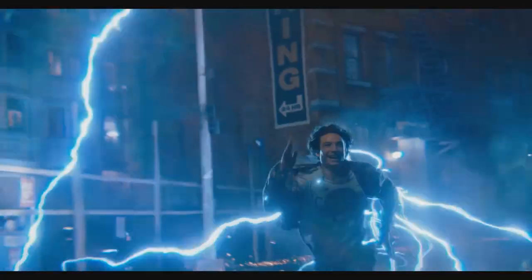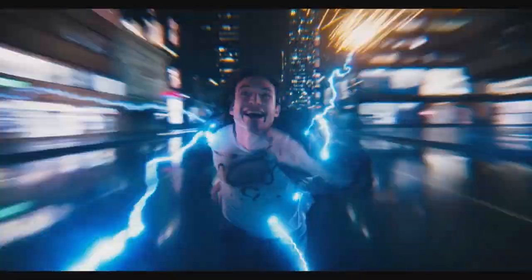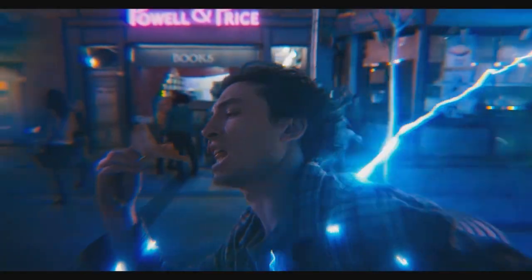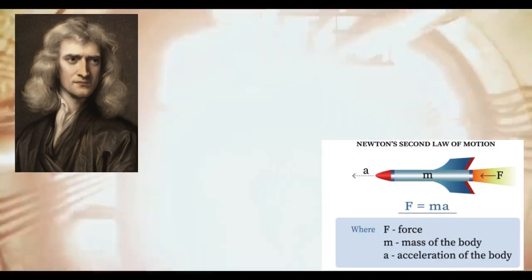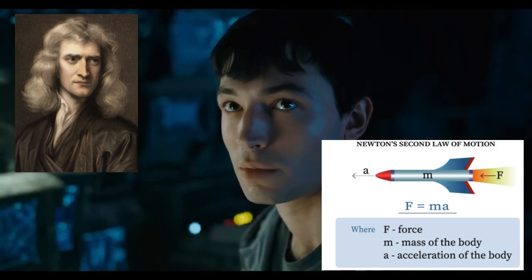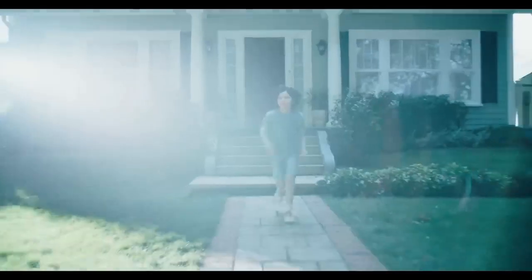In the movie we see the Flash displaying incredible speed, darting through the city in the blink of an eye. But how does he achieve such lightning fast movements? The key lies in the concept of acceleration. Acceleration is the rate of change of velocity, and the Flash's powers allow him to accelerate to incredibly high speeds in an instant. According to Newton's second law of motion, the force required to accelerate an object is directly proportional to its mass and its desired acceleration. Since the Flash has superhuman abilities, he can generate immense force with each stride, propelling himself forward at supersonic speeds.